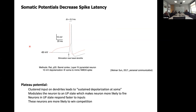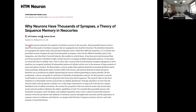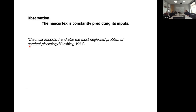Those ideas were the basis for our sequence memory, which Jeff first talked about in 2009 or 2010. This is what we call our neuron paper — published in 2016. Jeff made this observation — similar to ideas of predictive coding — that the neocortex is constantly predicting its input. There's a quote from Lashley from 1951 — Hebb's thesis supervisor — saying 'prediction is the most important and most neglected problem of cerebral physiology.'